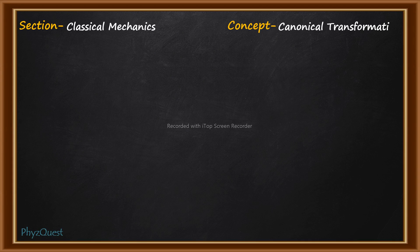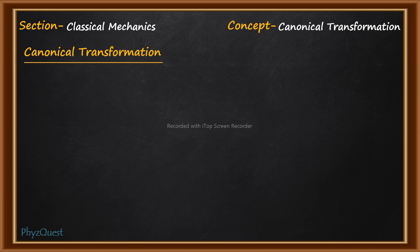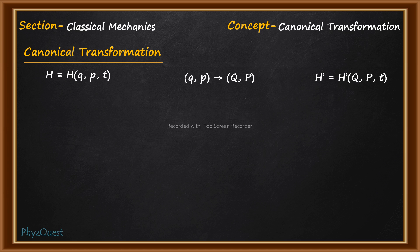This question comes from classical mechanics and the concept involved is canonical transformation. To describe the equation of motion of any system, Hamiltonian mechanics is a powerful tool. The Hamiltonian is a function of position and momentum. Sometimes, to solve the equations of motion conveniently, it becomes necessary to transform the coordinates — for example, using plane polar coordinates r and θ instead of Cartesian coordinates x and y for a pendulum problem.